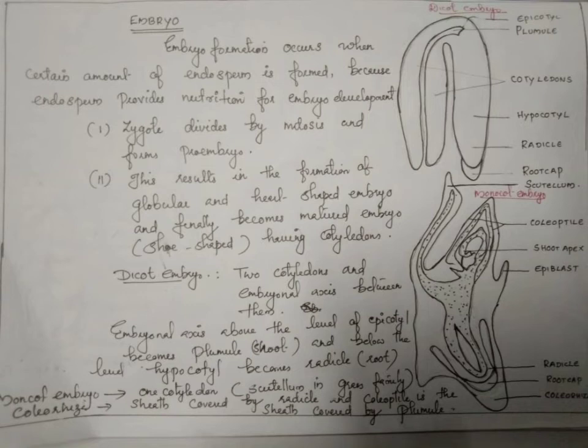An example of the monocot cotyledon is the scutellum in grass plants.